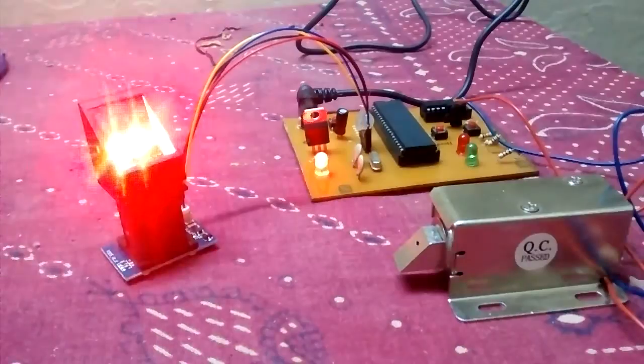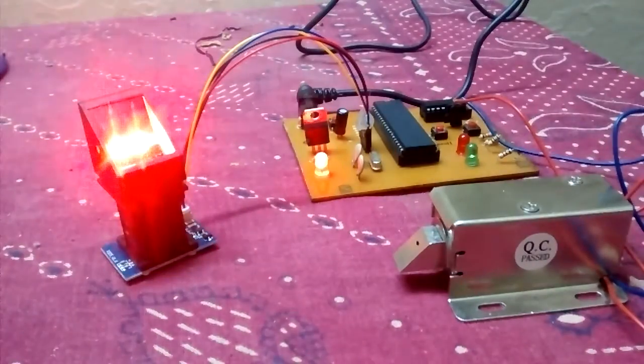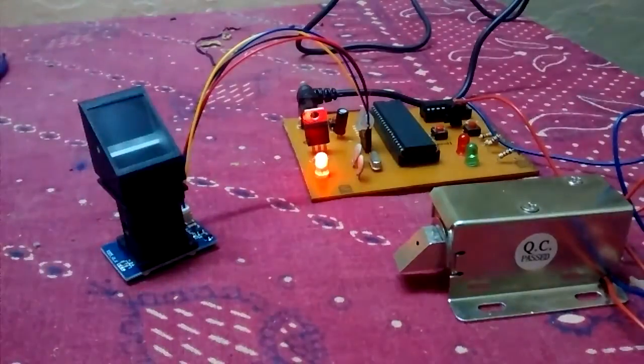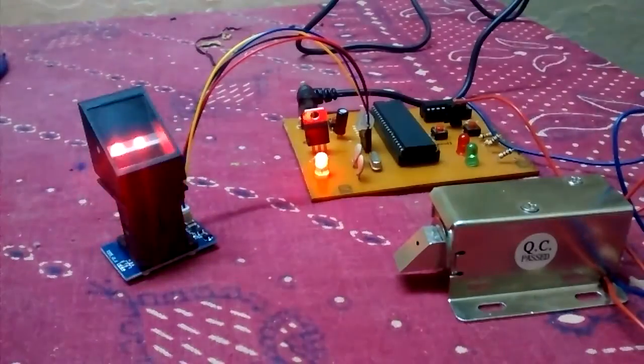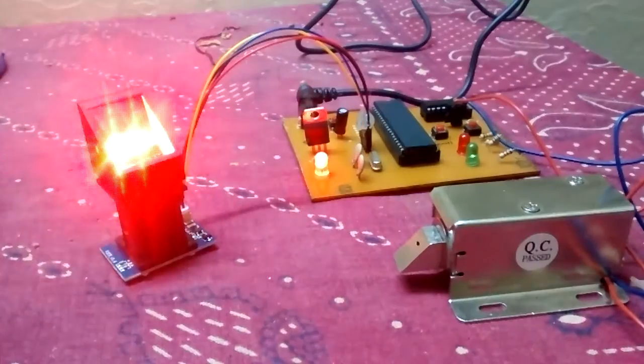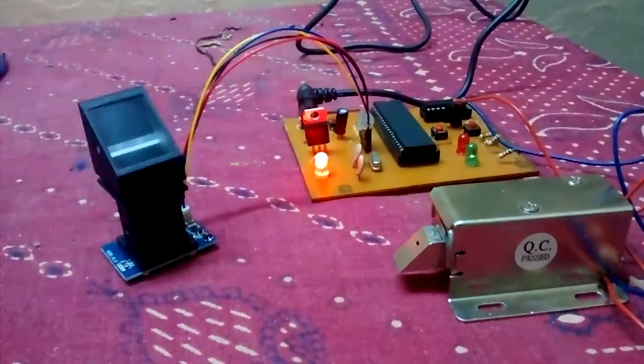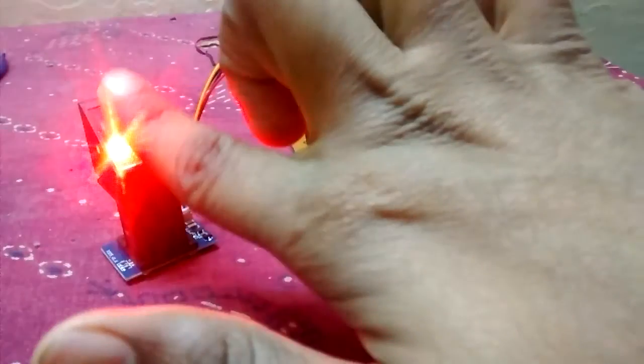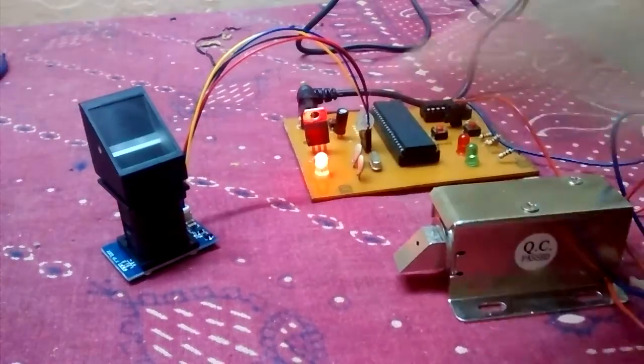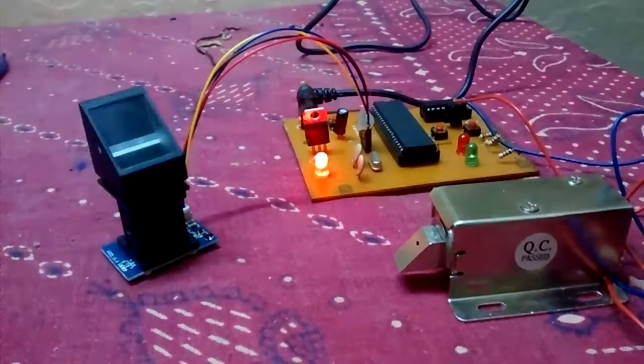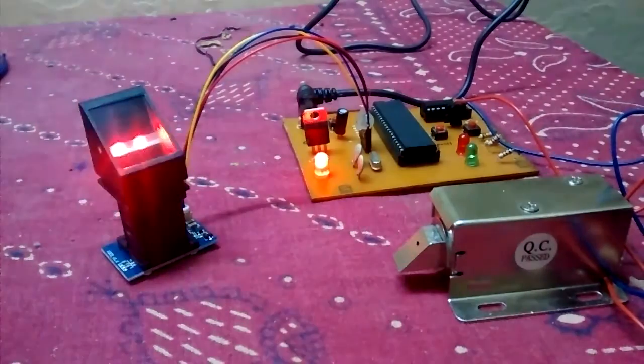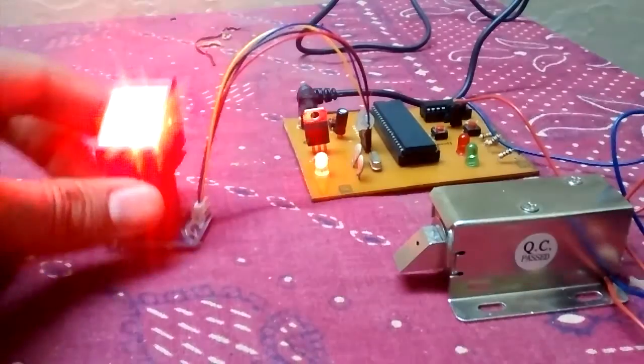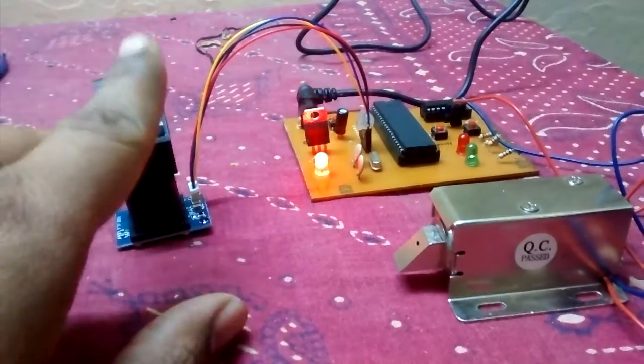The fingerprint sensor starts searching for a finger which you have already enrolled. Now, let the enrolled finger be this one. The lock will not open if the finger is not correct. If the finger is correct, like this...